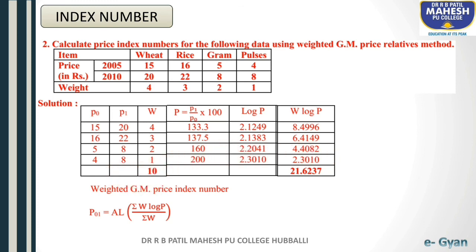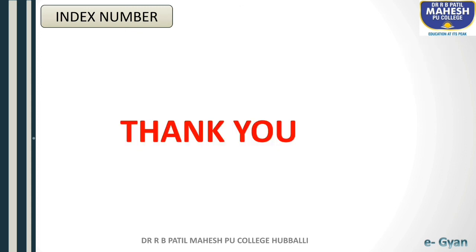Now substitute all values in the formula: antilog of [21.6237 divided by 10] equals antilog of 2.1624. Looking up the antilog table, antilog of 2.1624 is 145.3. So the weighted geometric mean price index number for this question is 145.3. In the next class, we are going to solve some more examples on weighted index numbers. Thank you.